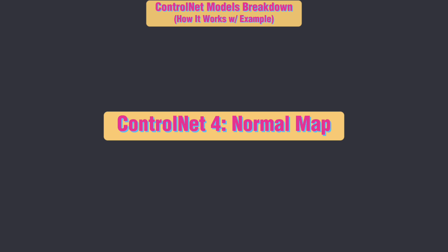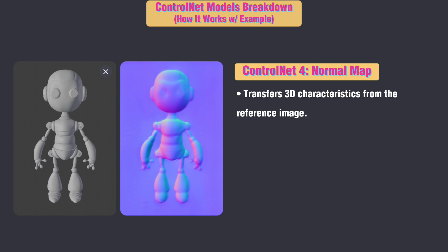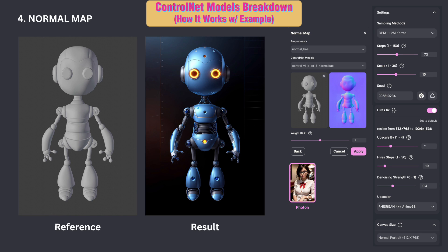ControlNet 4: Normal Map. You can use this to enhance your creations by transferring 3D characteristics from the reference image. Here is an example of transforming a plain robot model into something realistic.